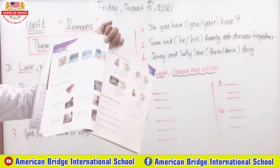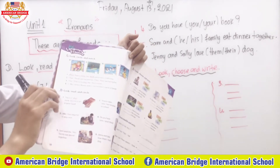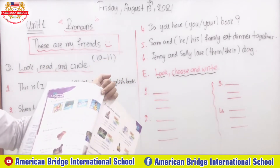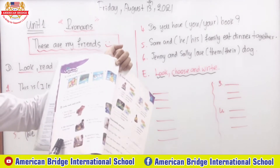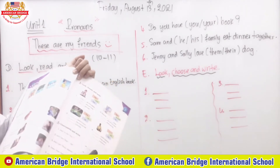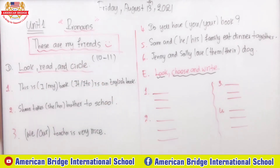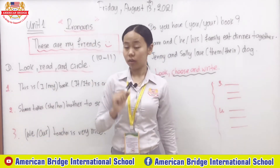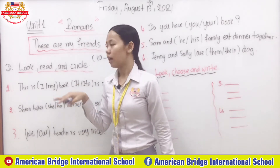Open your book to page 10 and you will see Section D: 'Look, Read, and Circle.' There are six statements that I also wrote on the board. After we finish, we'll move to Section E: 'Look, Choose, and Write.' For Section D, you just read each statement, look at it, and then circle the correct answer.